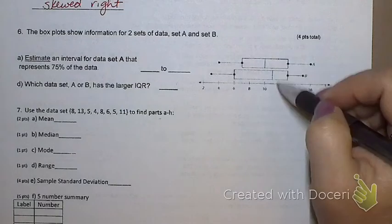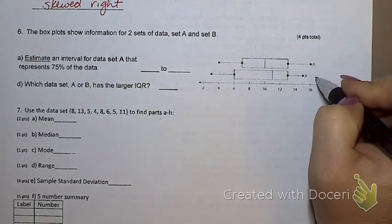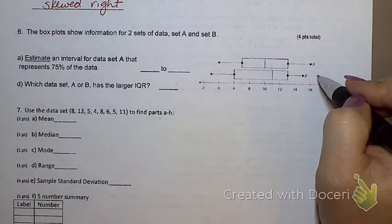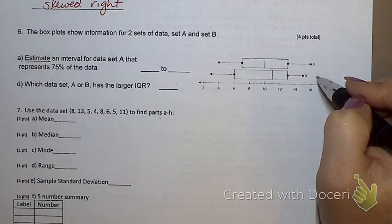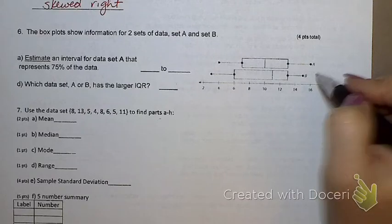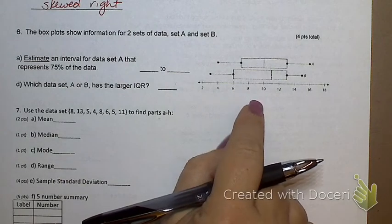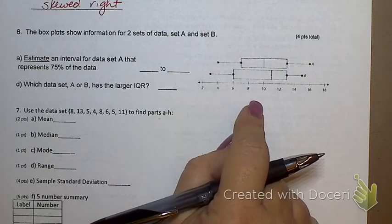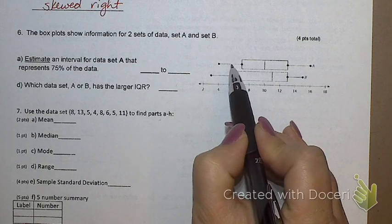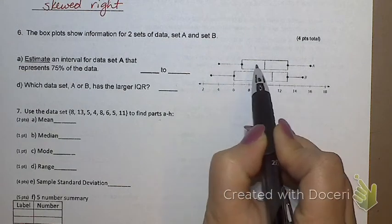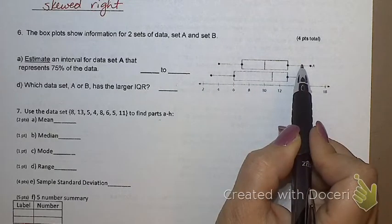The box plot shows information for two sets of data, set A and set B. A is the top one, B is the bottom one. Oftentimes you'll see two box plots together in order to compare them. Estimate an interval for data set A that represents 75% of the data. Notice the word estimate is underlined. Some people wrote, oh, that's from the minimum to Q3. That's not an estimation. What I want you to do is estimate based on this number line. Give me actual numbers. 75% of the data is either a whisker and the two boxes, or it's the two boxes and the last whisker. It has to be three sections in order to be 75.